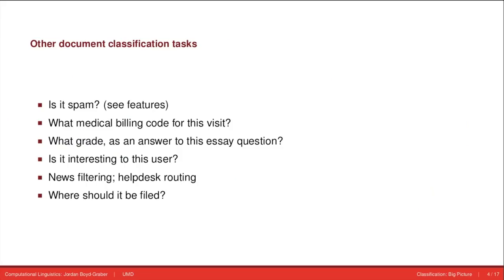We've talked about classification tasks like deciding whether an email is spam. Other examples include taking a look at a hospital visit and assigning what medical billing code should be received. In the United States, medical billing codes basically determine how the healthcare system works. Assigning these codes is very time-consuming and a huge part of what the U.S. budget is spent on.